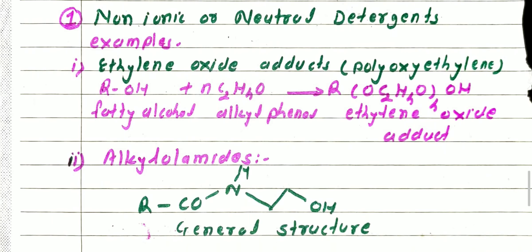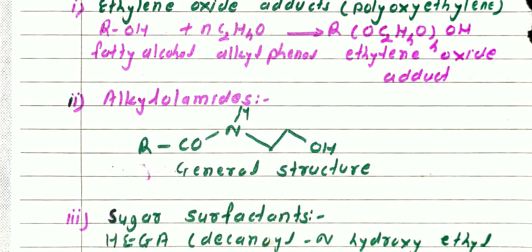The second example of non-ionic detergent is alkyloamides. They are formed by condensation of long chain fatty acids and alkyloamides — also called hydroxy amine. They are mixed with detergent to boost foam, so shampoos always contain alkyloamides.